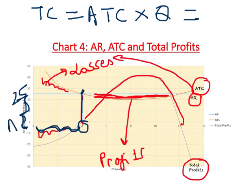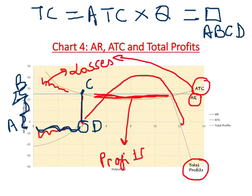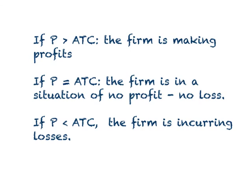Let us label this rectangle A, B, C, and D. Total cost of production is given by the area of rectangle ABCD. In a similar way, you can figure out total revenue from the average curves. Based on our discussion, you should remember the following rules: if price is greater than ATC, the firm is making profits; if price equals ATC, no profit, no loss; and if price is less than ATC, the firm is incurring losses. Thank you for your time.